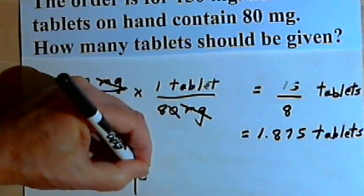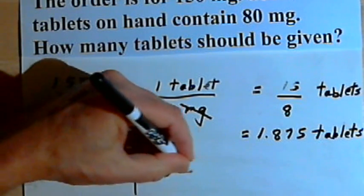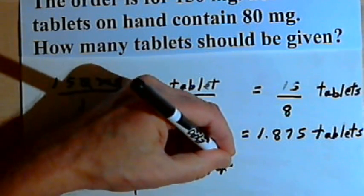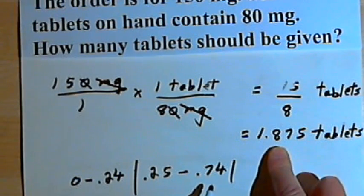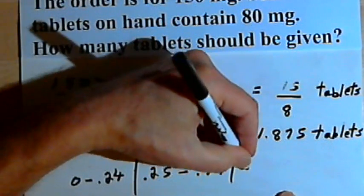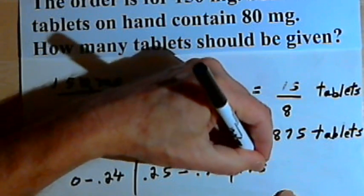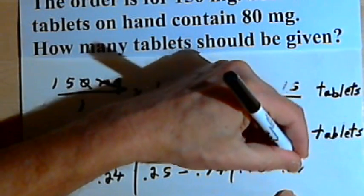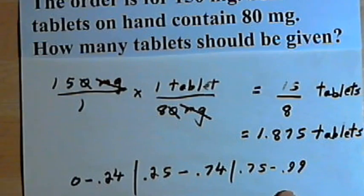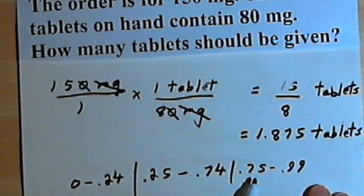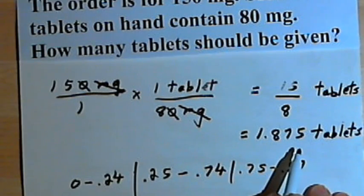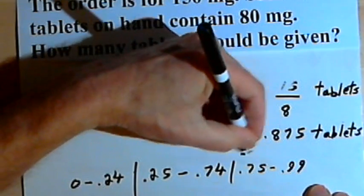If the decimal part of the answer is between 0.25 and 0.74, then we would give a half a tablet. We'd have, in other words, 1.5 tablets. If the decimal part is between 0.75 and 0.99, then we would round up. Well, the decimal part was 0.875. So that would mean that we round this answer up and we're going to end up with 2 tablets.